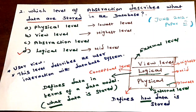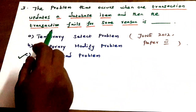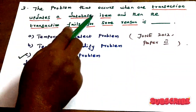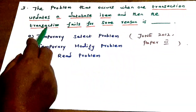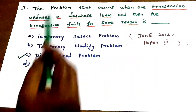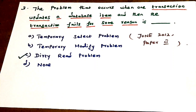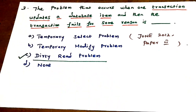Next question: the problem that occurs when one transaction updates a database item and then the transaction fails for some reason is — from June 2012. One transaction updates, then fails for some reason. The answer is: dirty read problem.